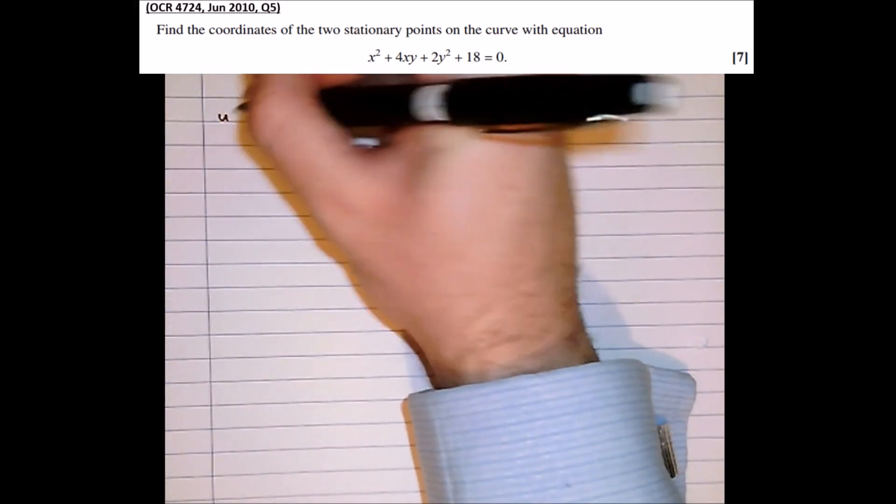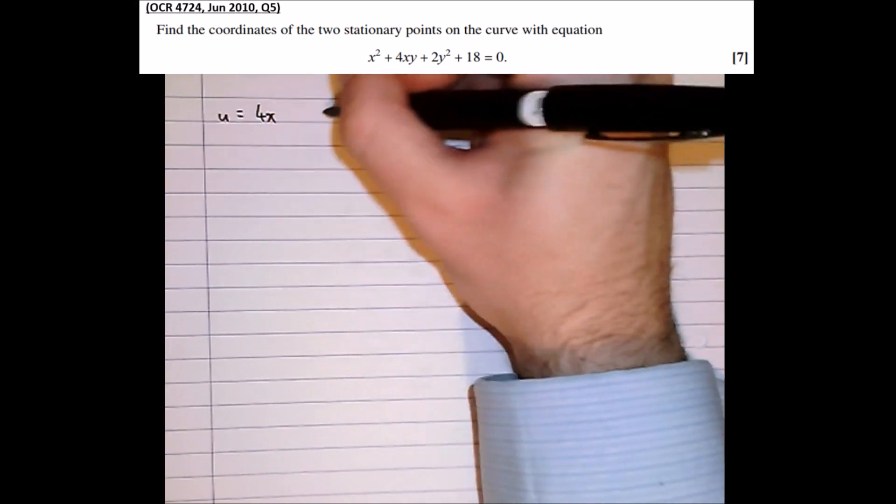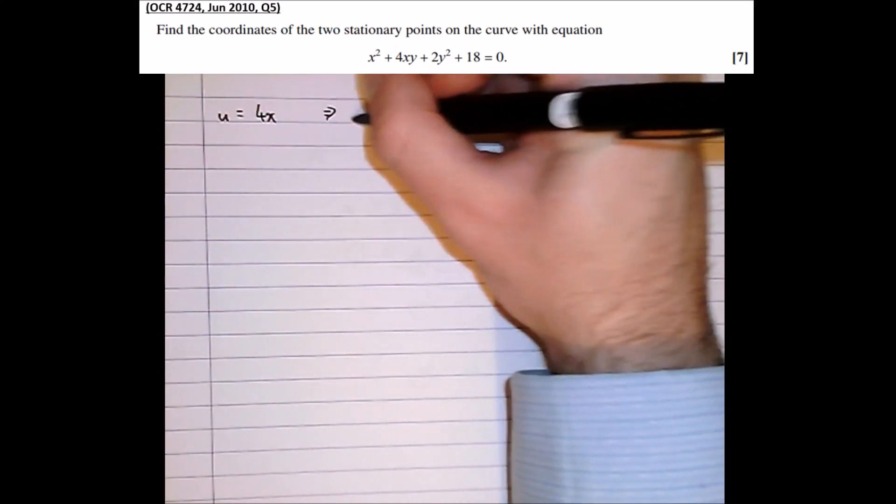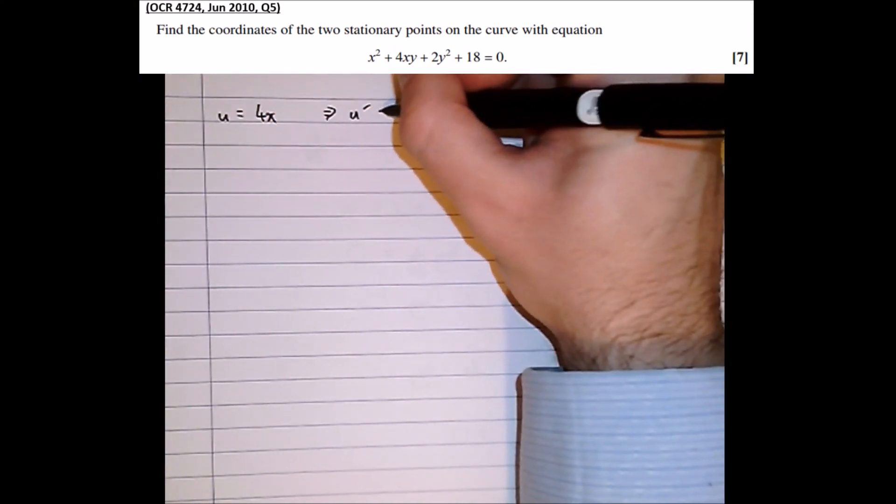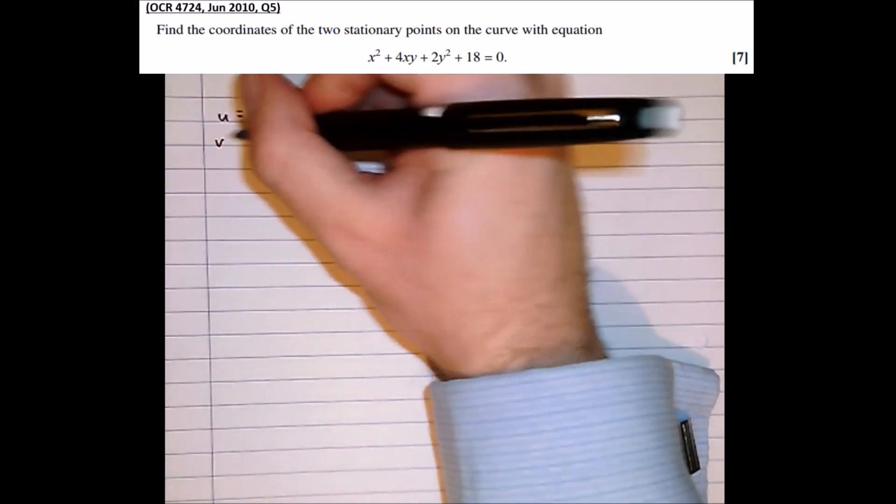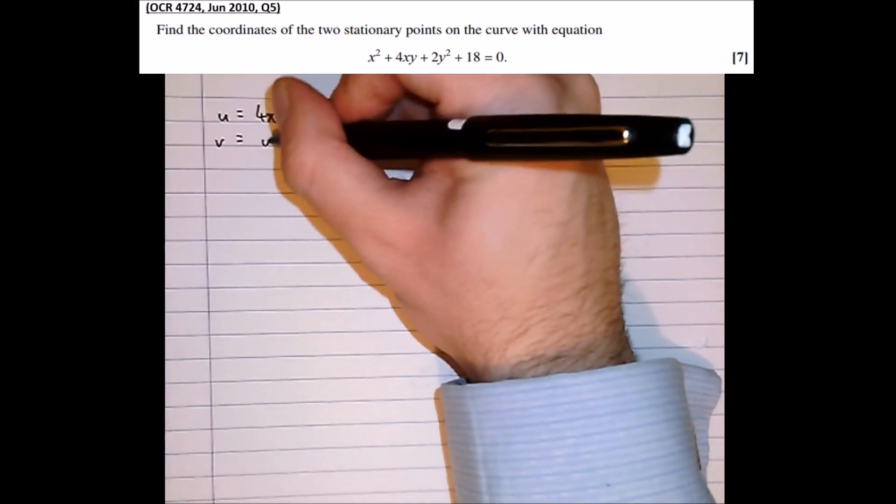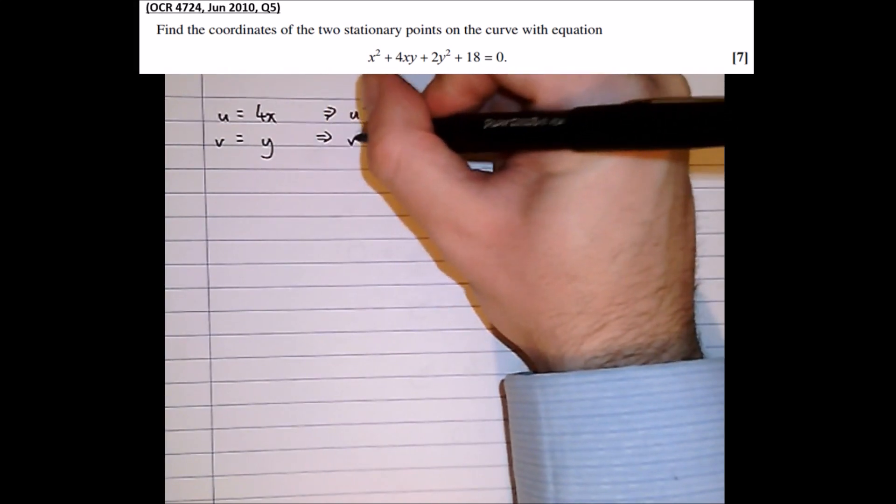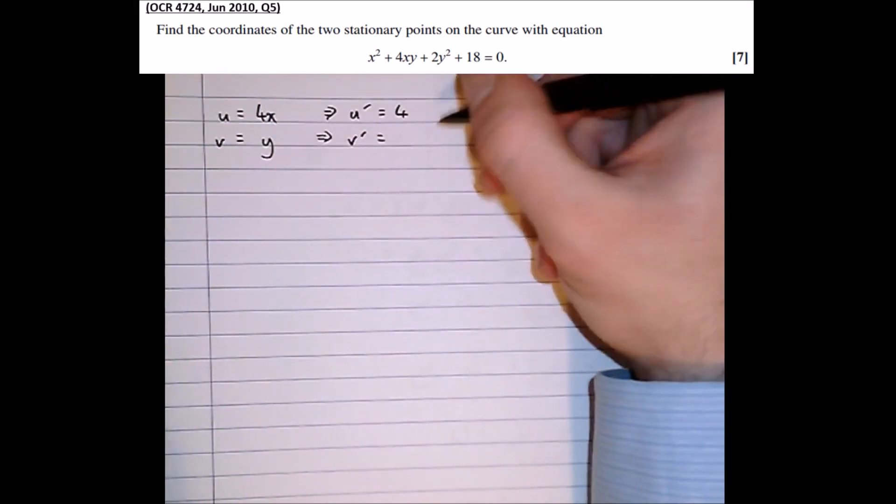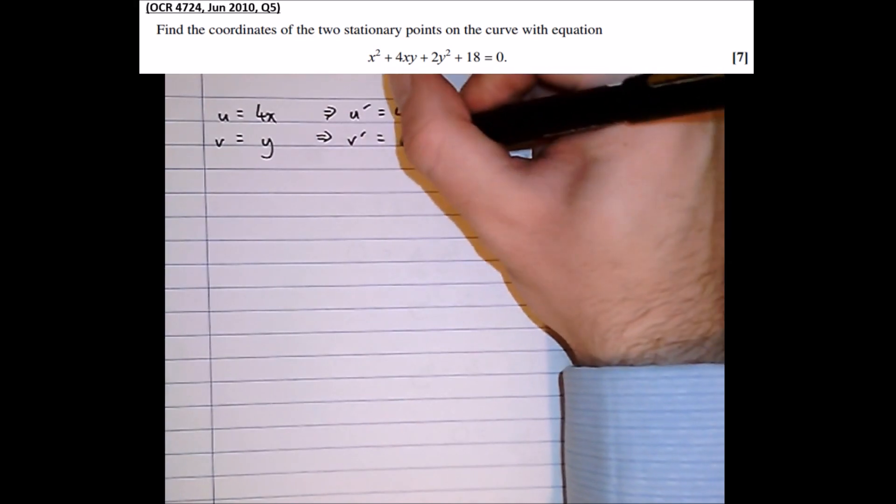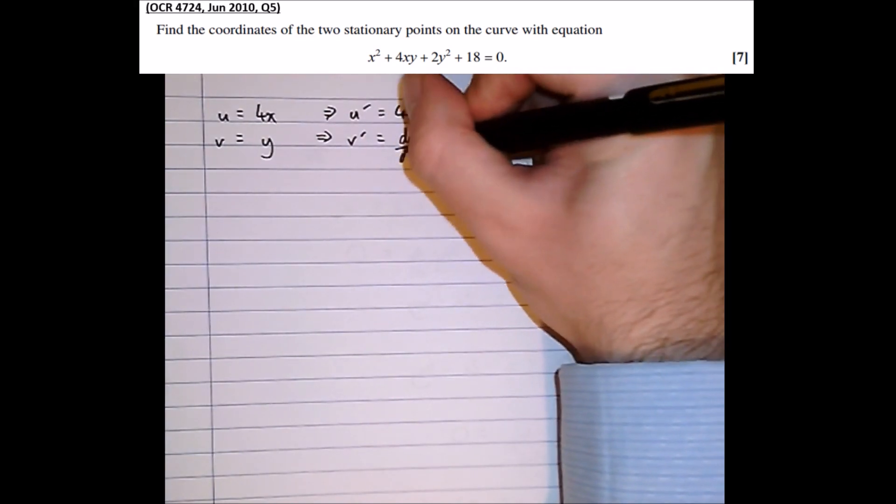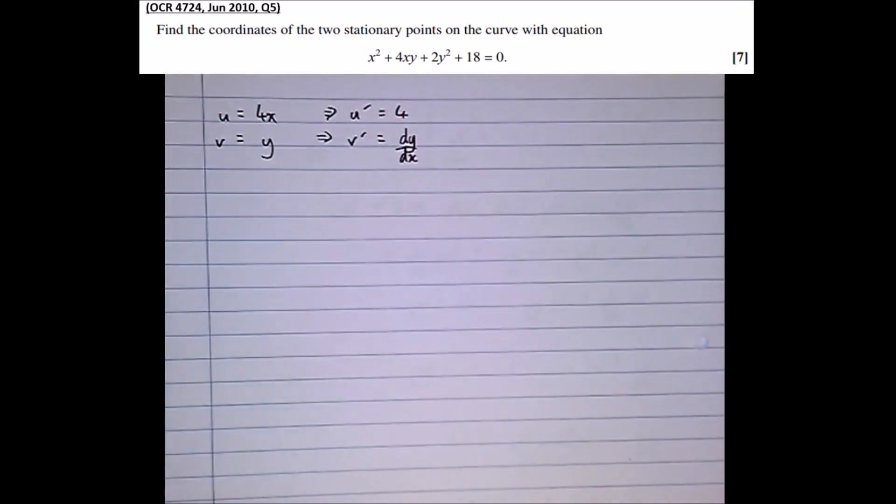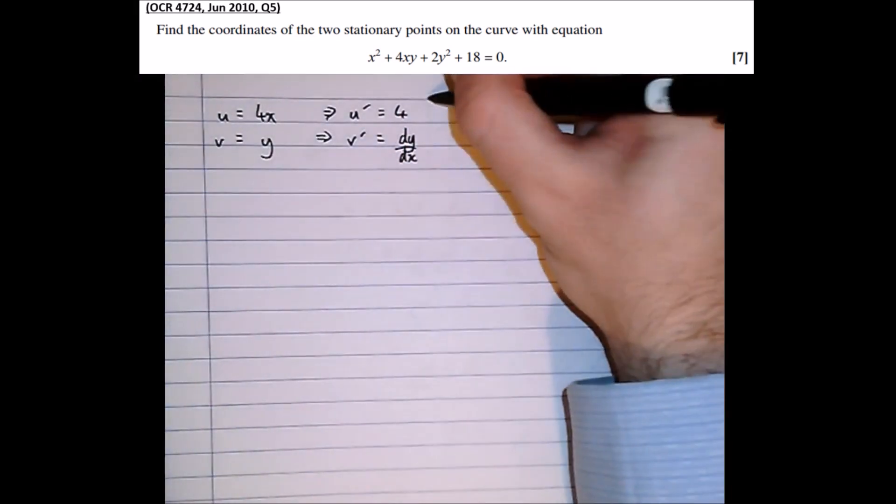So let's use the product rule. u equals 4x which means the differential of u, u dash equals 4. v equals the second thing in the product which is y, which means that v dash equals, well the differential of y is 1. But because we've differentiated a y we need to multiply by dy by dx. So it's 1 times dy by dx which is dy by dx.